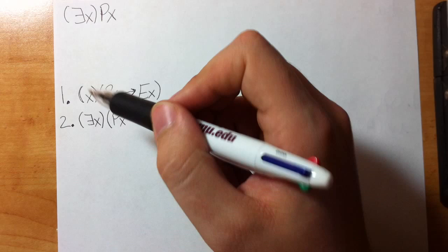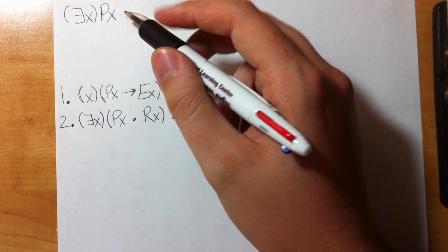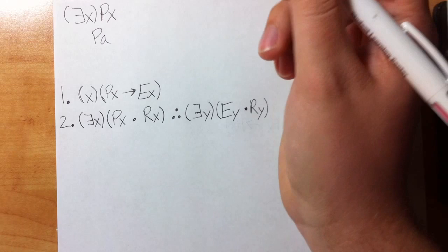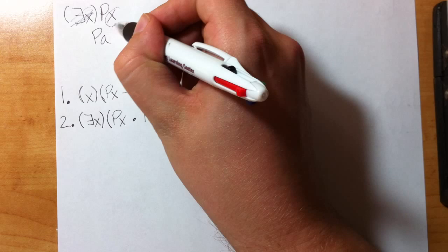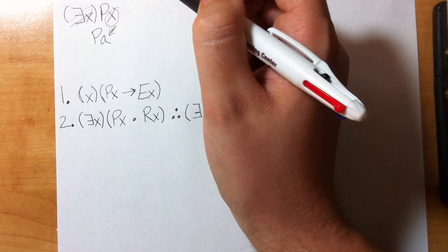EI is exactly like UI except we have restrictions—we can't do it whenever we want, we have to ask ourselves a couple of questions. But fundamentally it looks the same: existential x Px can become Pa or whatever letter you choose. We chop off the quantifier and replace the variable with a name, however it can't just be any name. We have to ask ourselves these two questions.